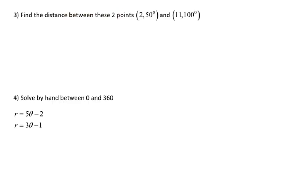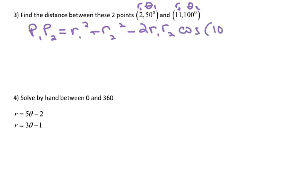Number three, find the distance between these two points: 2, 50 degrees and 11, 100 degrees. It turned out that the distance formula was actually the law of cosines. If you know these two radiuses, and we'll call this theta 1 and theta 2. And the distance between the two points is radius 1 squared plus radius 2 squared minus 2 times radius 1 times radius 2 times the cosine of the angle between them.